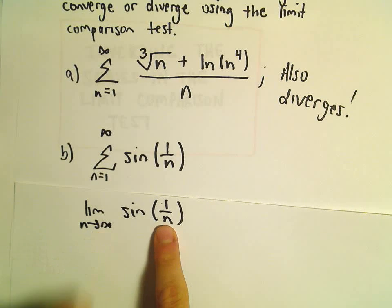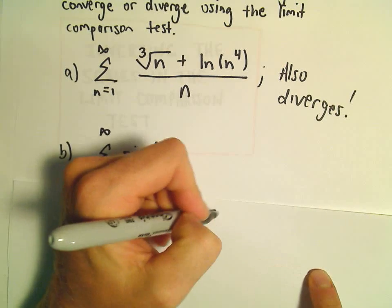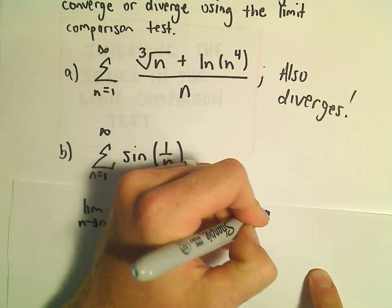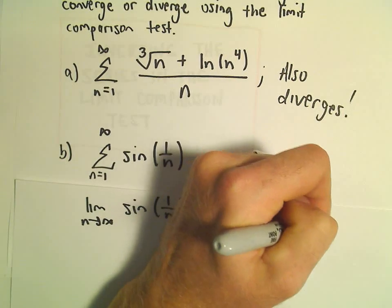Well, as n goes to infinity, inside the parentheses we'll get 1 over a large number, so that'll approach 0. So it approaches sine of 0, but sine of 0 is 0. So the test for divergence would be inconclusive.